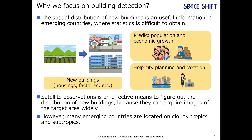We first explain the reason to focus on building detection and SAR satellite images. The spatial distribution of new buildings is useful information in emerging countries for growth models, city planning, and taxation. Satellite observation is a very powerful tool for this purpose, but many emerging countries are located in cloudy tropics and subtropics.